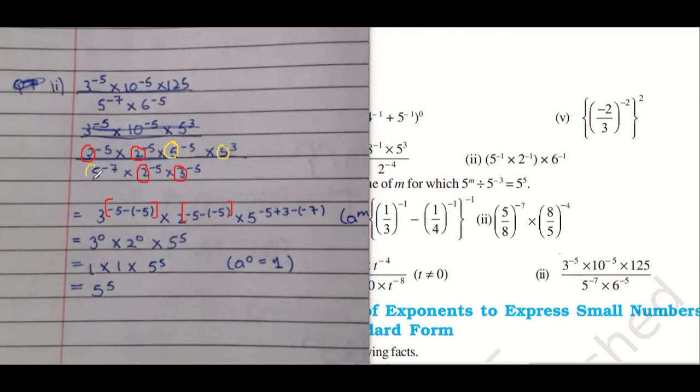1, 2, 3. So these 2 are in the numerator. So same base, power gets added. So minus 5 plus 3.